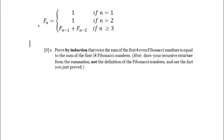Welcome to Problem 14, Part E of the Computer Science 213 Winter 2 Final Practice Exam questions. We just did an induction proof related to the Fibonacci sequence, and now we're asked to do a new induction proof. We're proving by induction that twice the sum of the first k even Fibonacci numbers is equal to the sum of the first 3k Fibonacci numbers. This is going to be our predicate.